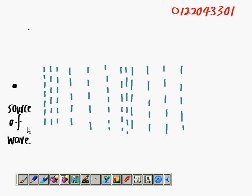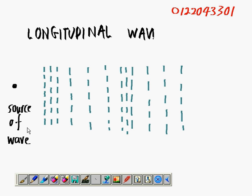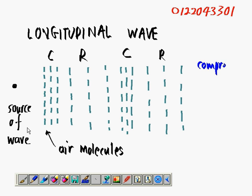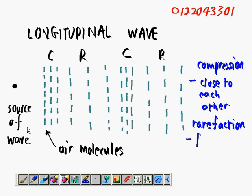Now let's look at longitudinal wave. We have a source of wave and it creates a region of the air molecules of compressed region as well as expanded region, but the expanded region we call it R, compressed region we call it C. The compressed region, the compression, is where the air molecules are very close to each other. As for R, we call it rarefaction, and the air molecules, they are far away.